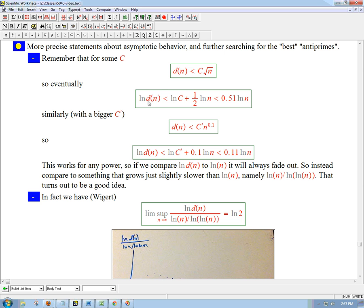Well, eventually, the one-half ln(n), ln(n) is growing, not super fast, but it's going to swamp whatever this constant is. So we just maybe take 0.5 and add a tiny bit to it. It's going to be less than, let's say, 0.51 ln(n). Similarly, we could also say that d(n) < C·n^0.1, so now ln(d(n)) is growing slower than 0.11 ln(n).